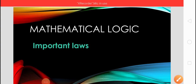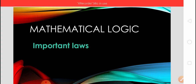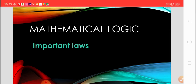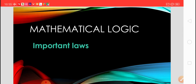In the last lecture we learnt about some important results, and on that result we solved some examples — the result implication, in which the questions depend on that result. We wrote compound statements without using 'if-then' using the implication result. Today we are going to learn about important laws.